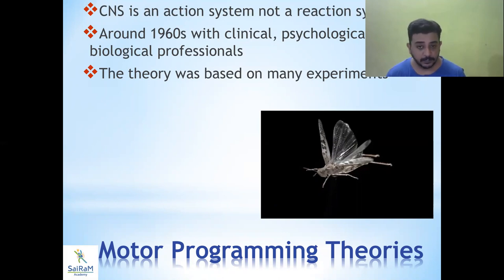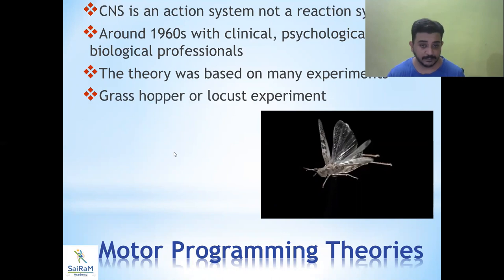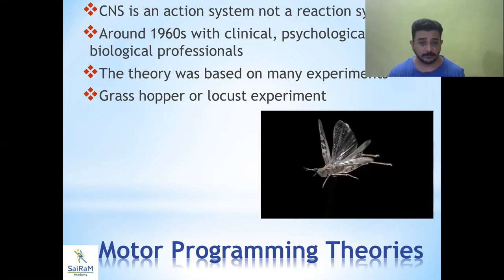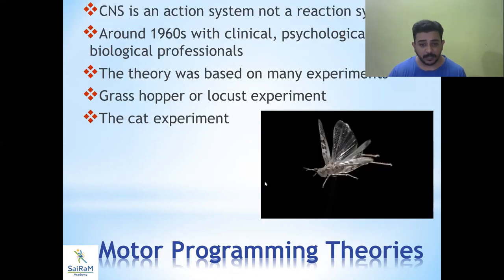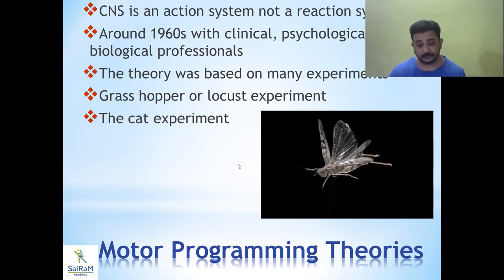This theory included psychologists and biologists apart from neuroclinicians, which is significant. Because when biological professionals enter the scene, they always experiment with animals. So this theory was based upon a lot of experiments done on many primate animals and vertebrates — animals like cats and locusts. There were experiments done on a grasshopper or locust.